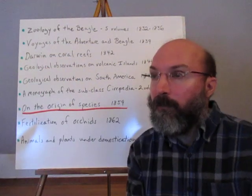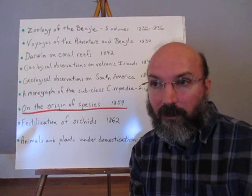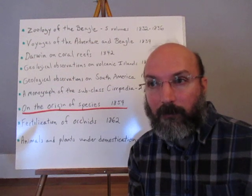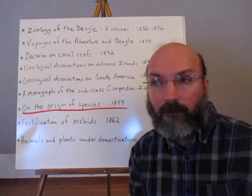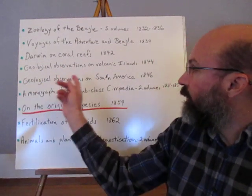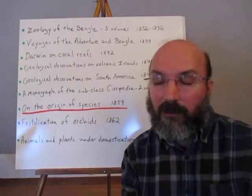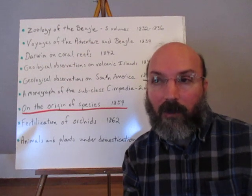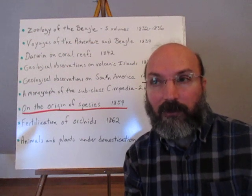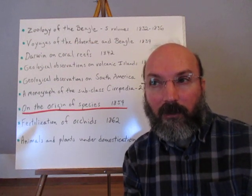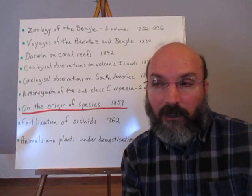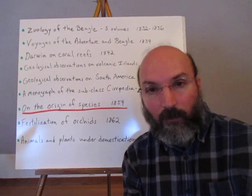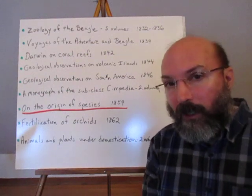Darwin was the first to describe how coral atolls form — a volcanic island erodes away, but the coral reef around its perimeter keeps growing because coral reefs are living, until you're left with an atoll. He made geological observations in South America and witnessed an earthquake that lifted the seafloor several feet, stranding mussels and barnacles. This led him to think how, over immense time, seafloor could be pushed to the tops of mountains — consistent with evidence of sea fossils found atop the Himalayas.